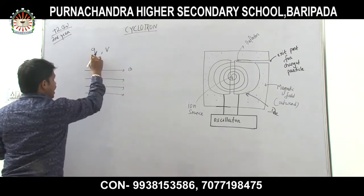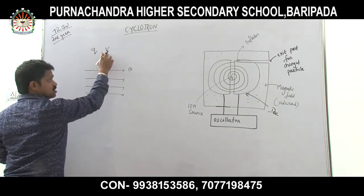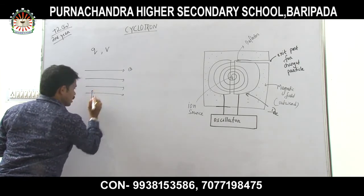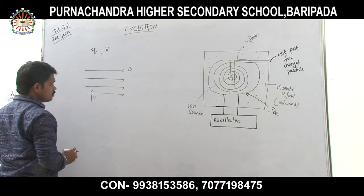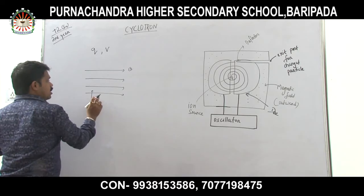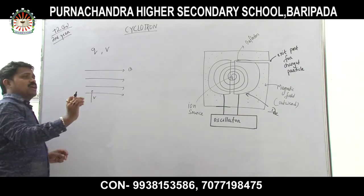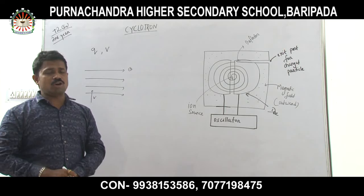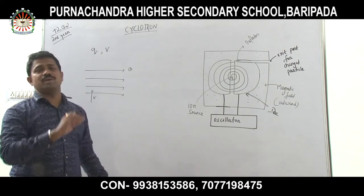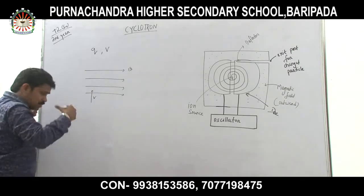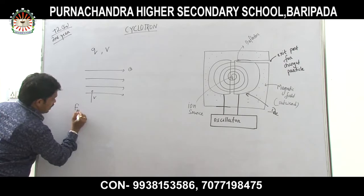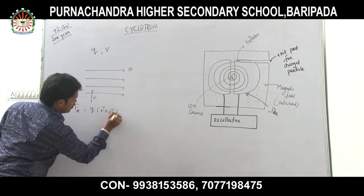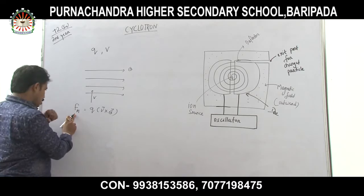Now, when a charged particle is moving with a velocity V in a magnetic field, the force applicable on it is called the Lorentz magnetic force, which we have discussed in the previous class. The expression of Lorentz magnetic force is F = Q(V × B), which gives us QVB sine θ.